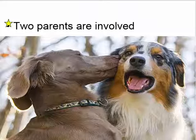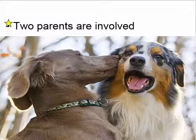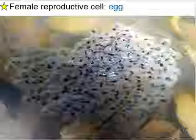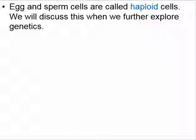What are some characteristics of sexual reproduction? First of all, we have two parents involved. In a future lecture on asexual reproduction, there is only one parent involved. What specialized cells are required in sexual reproduction? The male reproductive cell is called sperm, and the female reproductive cell is called egg. Egg and sperm cells are called haploid cells — we're going to discuss this when we further explore genetics.